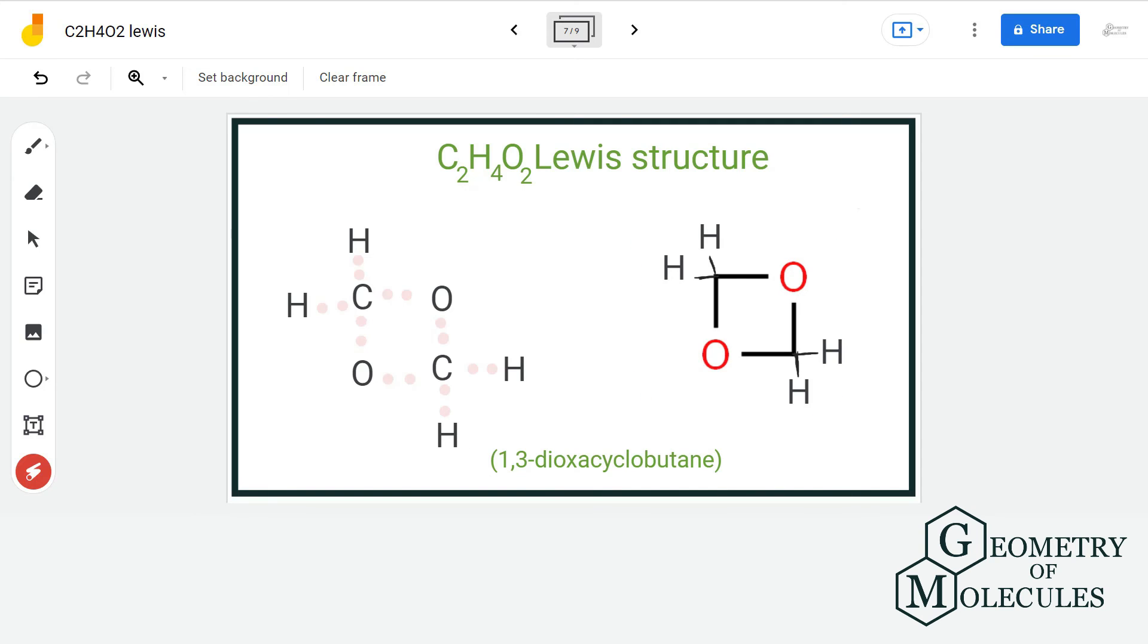If we change the position of carbon and oxygen in this structure, we will have a whole new molecule and the name of that molecule is 1,2 dioxycyclobutane and this is its Lewis structure.